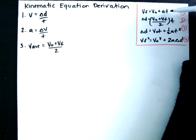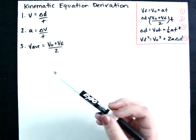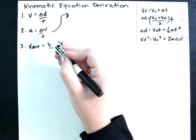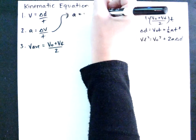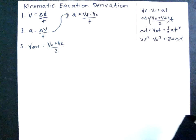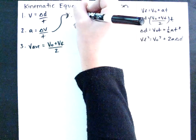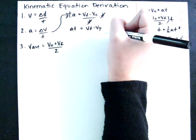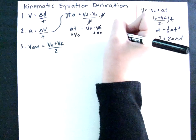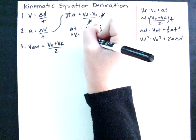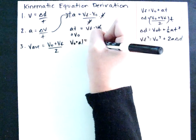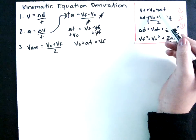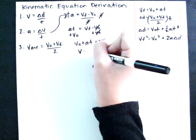To find our first kinematic equation — VF equals VO plus AT — we rearrange the acceleration equation. Delta means change, so we rewrite it as VF minus VO divided by time. Solving for VF: multiply both sides by T, giving AT equals VF minus VO. Then add VO to both sides, and we get VF equals VO plus AT. That is our first equation.